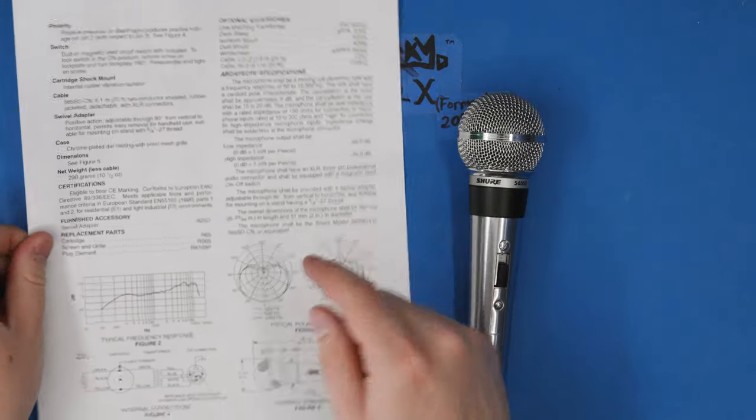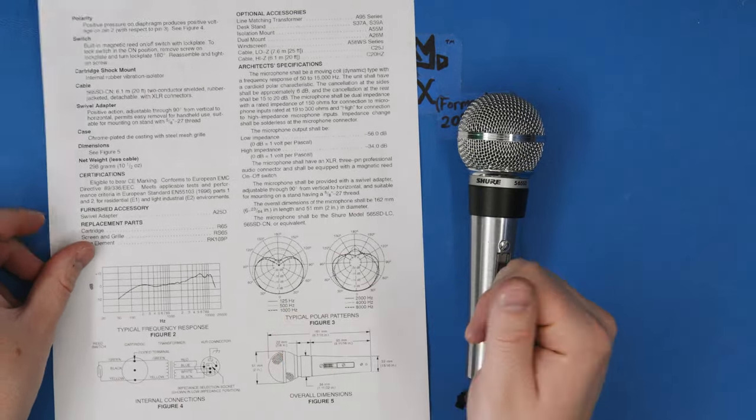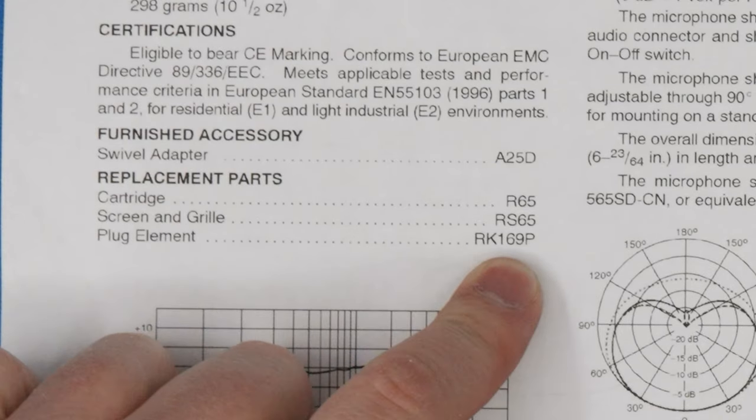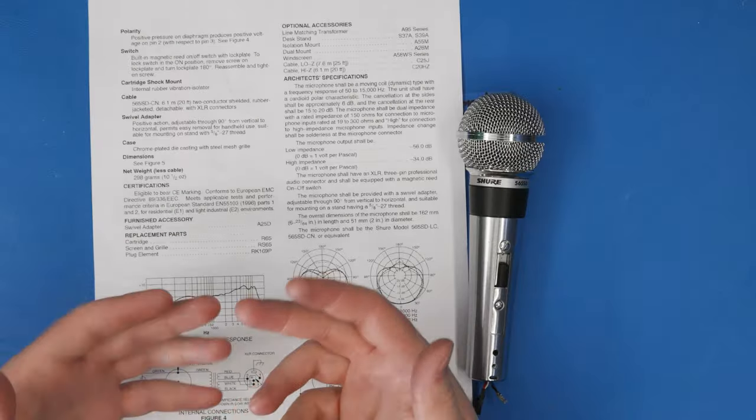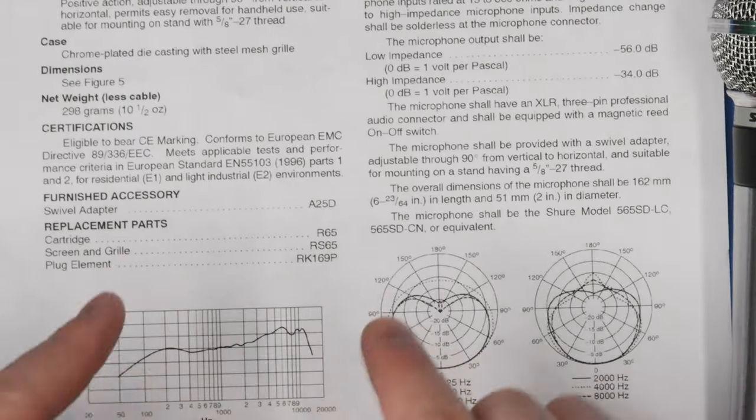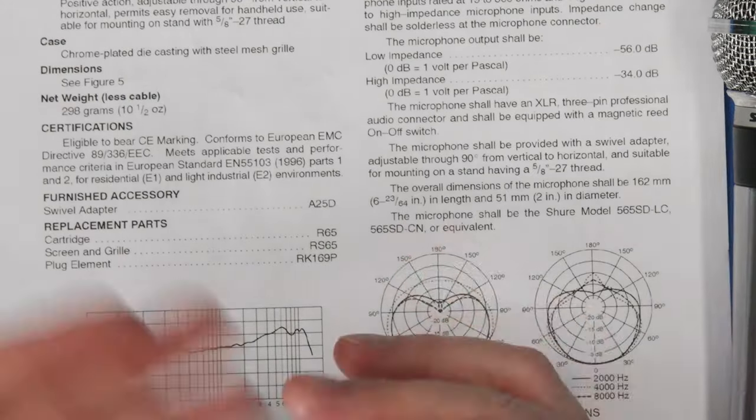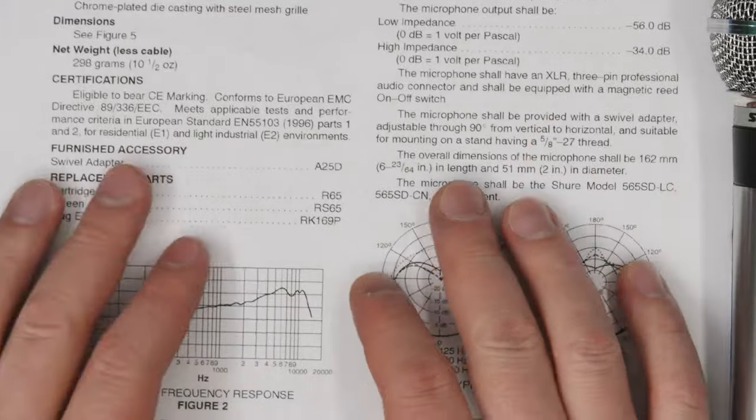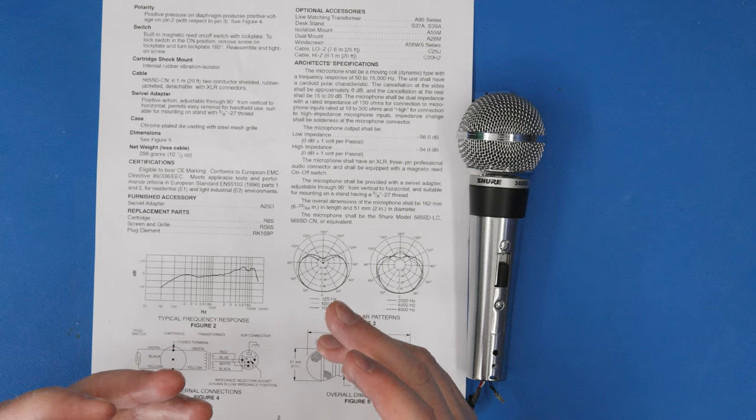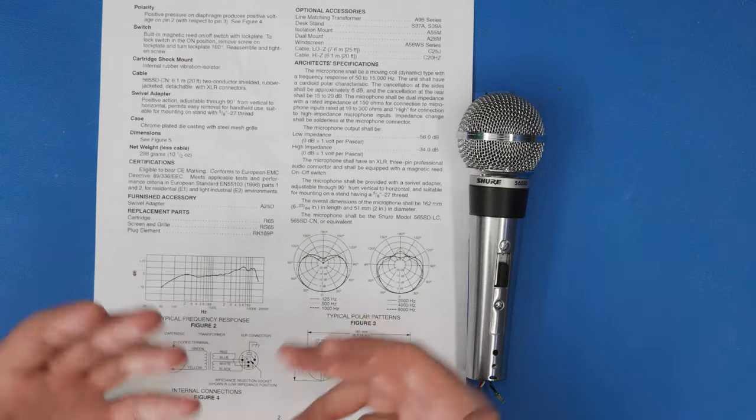So I printed off this old datasheet for this microphone. This one's from 2003, and it lists the part number for the plug element as RK169P. That's not a part you're going to be able to get easily. This part number isn't even listed in the current version of the datasheet. Shure doesn't sell this part on their website, and if you go looking for it, you're just not going to find it.